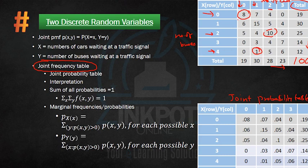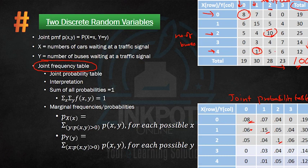The joint probability table is obtained by dividing each frequency by the total number of observations. Each cell value is obtained by dividing the corresponding cell in the joint frequency table by 100 — so 8 divided by 100 gives 0.08, 6 divided by 100 gives 0.06, and so on. The joint probability table tells us the probabilities of the random variables taking those particular values, essentially translating raw frequencies into probabilities.